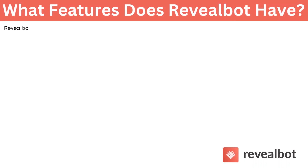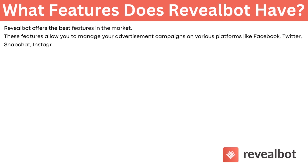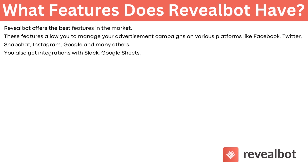What features does Revealbot have? Revealbot offers the best features in the market. These features allow you to manage your advertising campaigns on various platforms like Facebook, Twitter, Snapchat, Instagram, Google, and many others. You also get integrations with Slack, Google Sheets, Google Analytics, and YouTube.